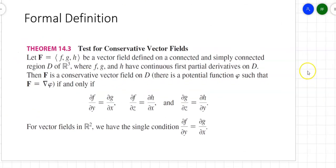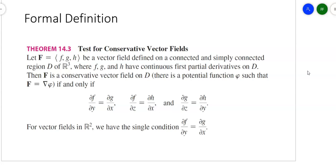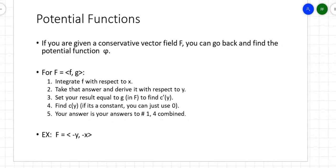This is a restatement — theorem 14.3 (or 17.3 in a newer book) — as a test for conservative vector fields: partial f with respect to y equals partial g with respect to x; partial f with respect to z equals partial h with respect to x; and partial g with respect to z equals partial h with respect to y. For vector fields in R², you only need to check that the partial of f with respect to y equals the partial of g with respect to x.